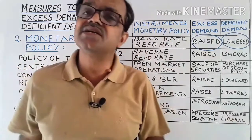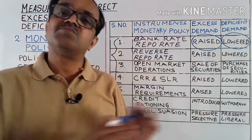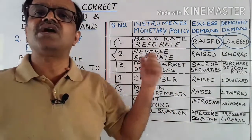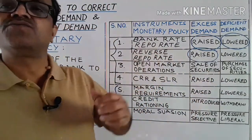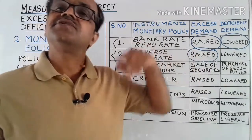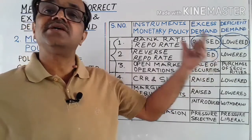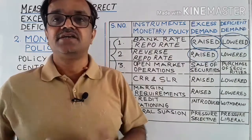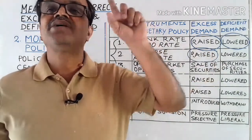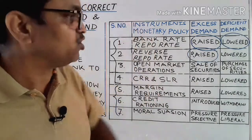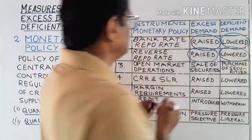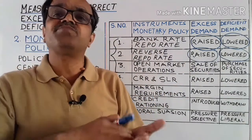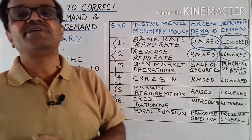Number two is the reverse repo rate — the rate at which commercial banks deposit their surplus funds with the central bank, which pays interest on those deposits. During excess demand, the central bank raises the reverse repo rate, so commercial banks deposit more with the central bank. Their cash reserves decrease, reducing their credit creation capacity, money supply falls, and aggregate demand decreases. During deficient demand, the central bank lowers the reverse repo rate, so commercial banks keep more cash, increasing credit creation capacity and money supply.